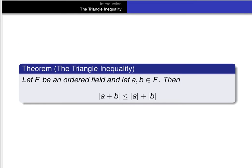The triangle inequality says that if f is an ordered field and a and b are elements of f, then the absolute value of the sum of a and b is less than or equal to the sum of the absolute values of a and b.